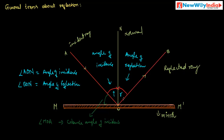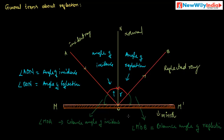The angle which the reflected ray makes with the mirror is called glancing angle of reflection. Here, angle M'OB is the glancing angle of reflection. So these are some important terms related to reflection.